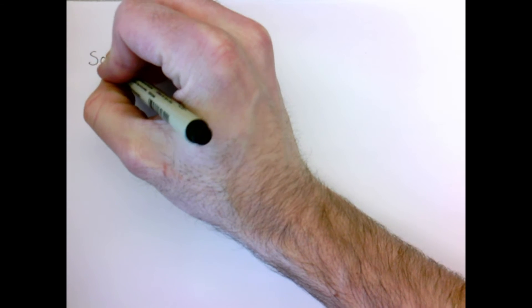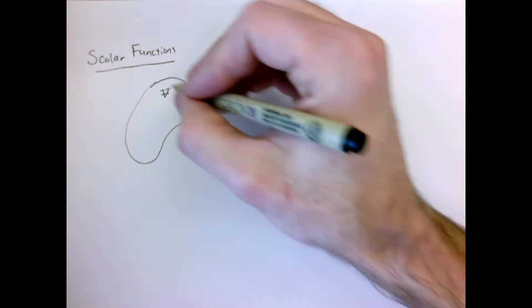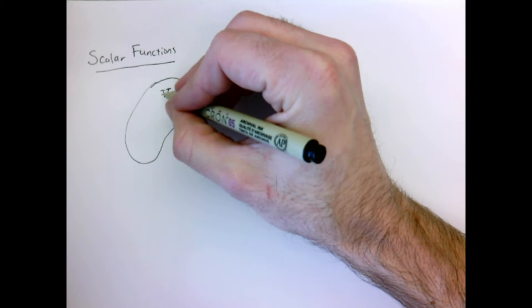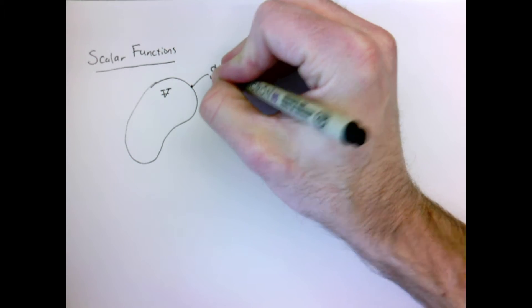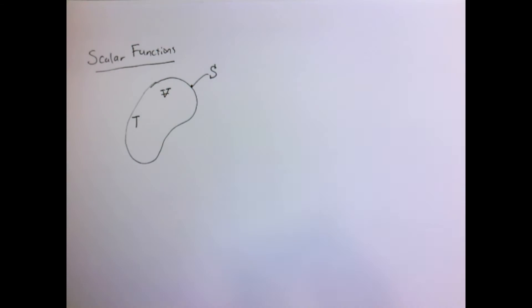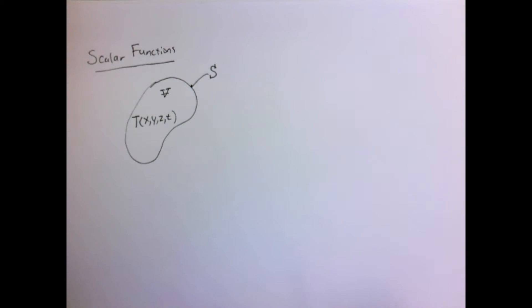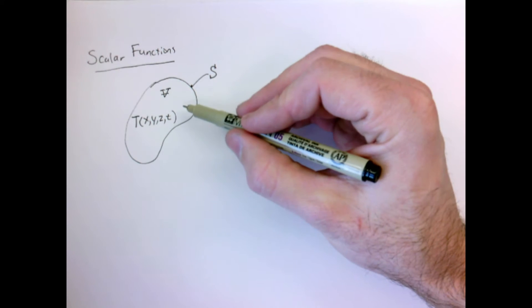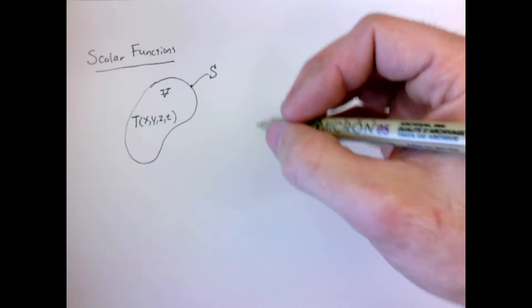First, let's talk about scalar functions. Usually we'll be discussing some region of space — I'll draw it as an arbitrary potato. This will typically be a volume V, so I'll use capital V to denote volume, with a line through it to distinguish it. I'll use capital S to denote the surface of that region. Inside the region we might have something like temperature, defined as a function of x, y, z, and time, so at every point in space and every instant in time, temperature has a single value.